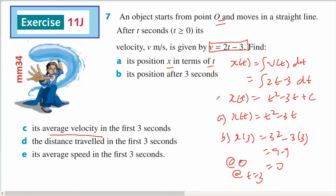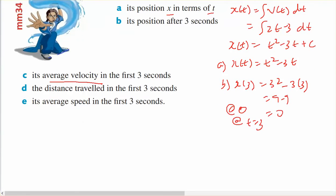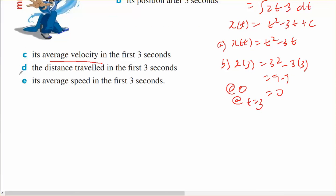Find the average velocity, so this is an average value question. Our average velocity will be 1 over 3 minus 0 for the first 3 seconds, integral from 0 to 3 of 2t minus 3 dt, which is 1 third times t squared minus 3t from 3 to 0. And that's going to be 9 minus 9 minus 0 plus 0, which is 0.